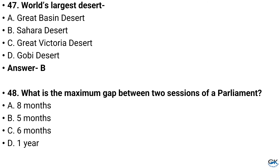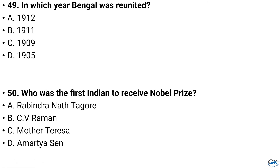Question number 48. What is the maximum gap between two sessions of Parliament? Option A: Eight months, Option B: Five months, Option C: Six months, Option D: One year. And the answer is Option C: Six months.